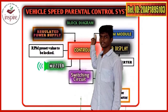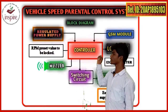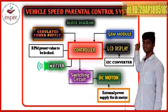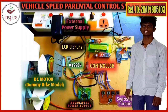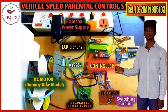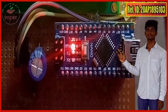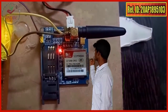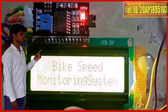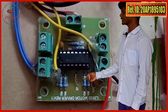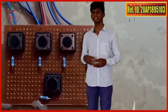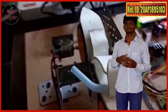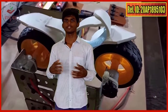The project is based on this block diagram containing a controller as the core and other peripherals interfaced as displayed here. The circuit is as depicted. The components of the circuit are: Arduino Nano, GSM module, LCD display, regulator power supply, DC motor, vehicle speed control unit, and a dummy bike model where DC motors are fixed.